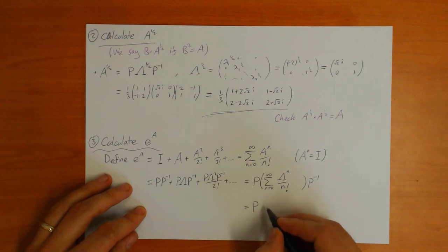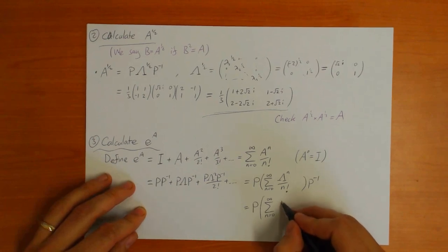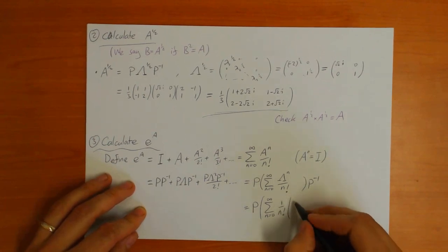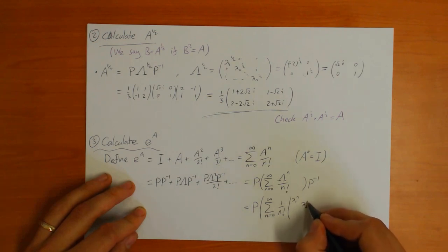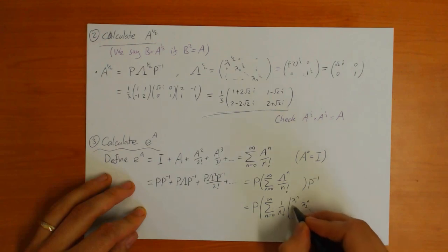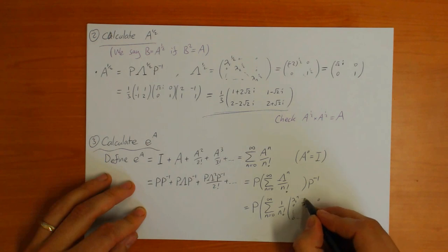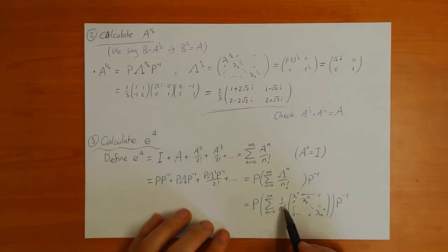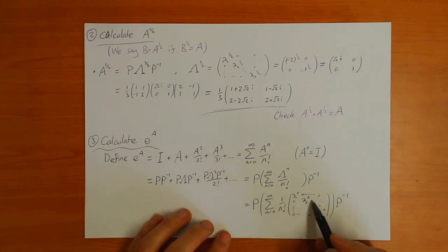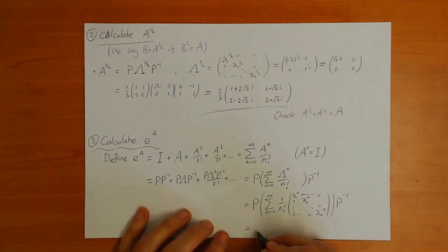This middle sum is P times the diagonal matrix whose entries are the sums of lambda-1 to the n over n-factorial, lambda-2 to the n over n-factorial, up to lambda-m to the n over n-factorial. Each of those sums is just the scalar exponential of the corresponding eigenvalue. So the result is: e to the A equals P times the diagonal matrix with entries e to the lambda-1, e to the lambda-2, up to e to the lambda-m, times P-inverse.